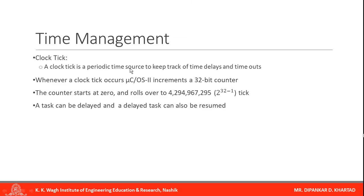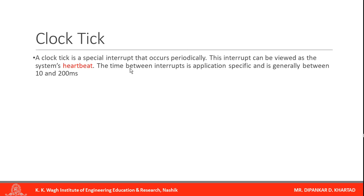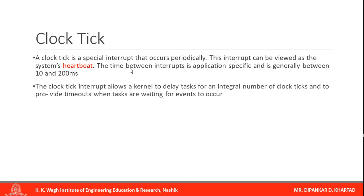A task can be delayed and a delayed task can be resumed. A clock tick is a special interrupt that occurs periodically and can be viewed as a system heartbeat. The time between interrupts is application-specific and is generally between 10 to 200 milliseconds. The clock tick interrupt allows a kernel to delay tasks for an integral number of clock ticks and to provide timeouts when tasks are waiting for an event. The faster the tick rate, the higher the overhead imposed on the system, because more task executions occur.